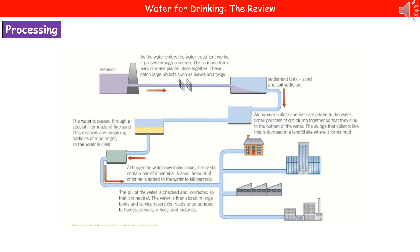We then add chemicals called lime and aluminium sulfate. The idea behind adding those two chemicals is that they cause the clumping of the small particles that were too light to sink to the bottom. Once they've clumped together, they will sink to the bottom and that material can be taken off to landfill.